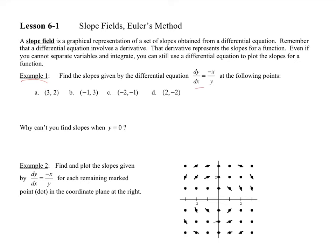Let's look at the first example: find the slopes given by the differential equation dy/dx = -x/y at the following points. For part A at (3, 2), we plug into the differential equation and get negative 3 over 2. Make sure you don't mix up the x's and y's — that happens sometimes. Why don't you try parts B, C, and D and see what you get.